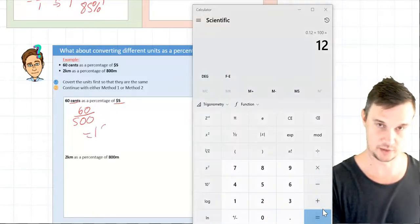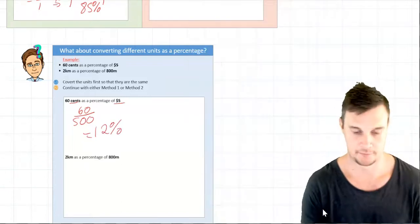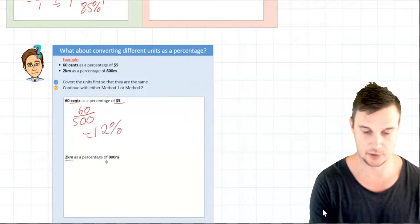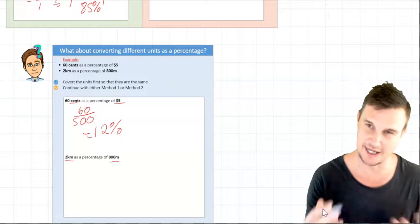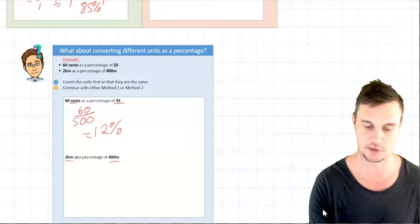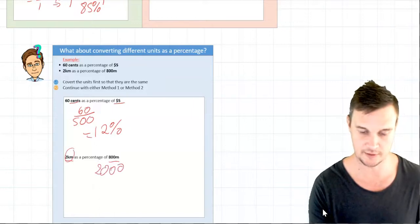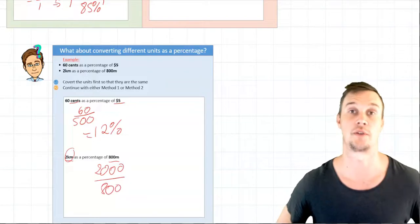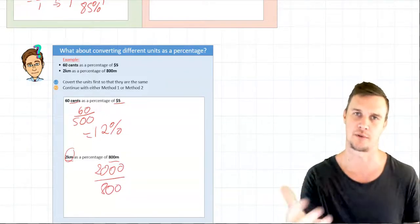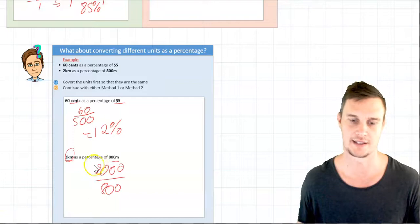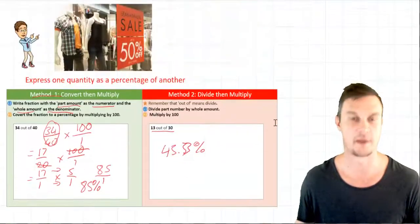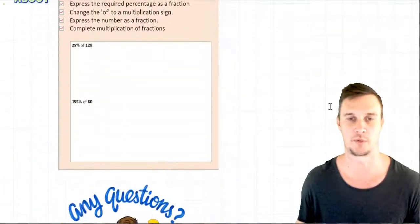So there I can write 12 percent. And finally if we have 2 kilometers as a percentage of 800, again I want to convert them to the same unit so I'm going to turn the kilometers into meters. So that would be 2,000 over 800, and I'll get you to choose whether you do method one or method two to answer that question there. But once you've converted it to a fraction you simply go as it says there onto method one or method two whichever you feel comfortable with.